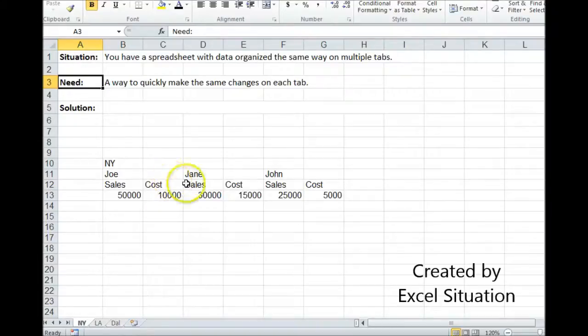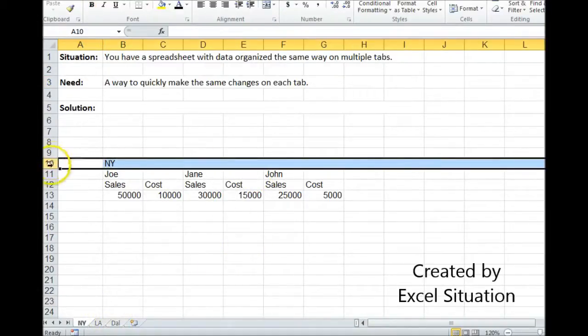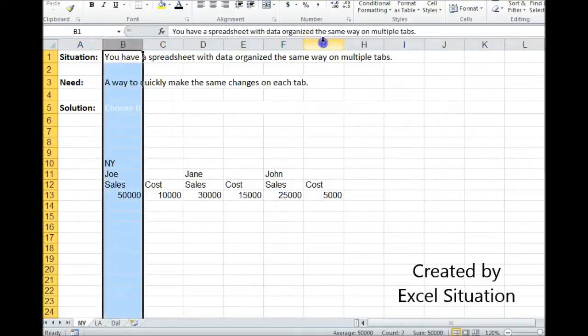So let's take a look at this example. Here I have three tabs, one for the New York branch, one for the LA branch, one for the Dallas branch. They're all organized the same way. They all start on row 10 and they go from B to G.